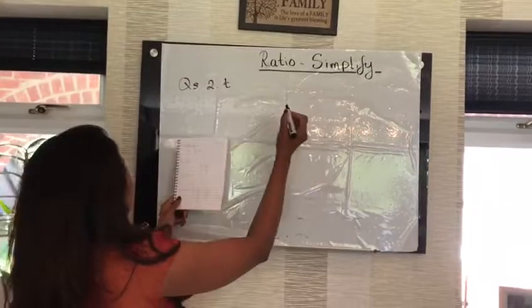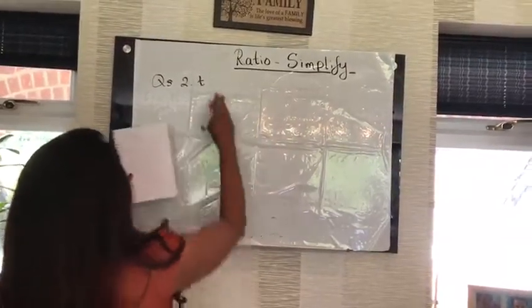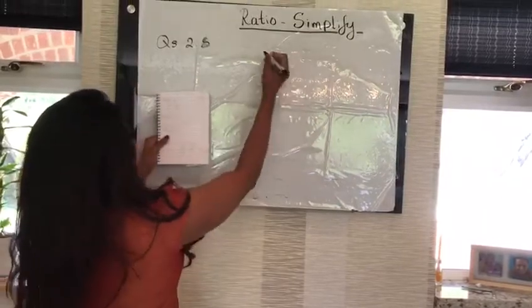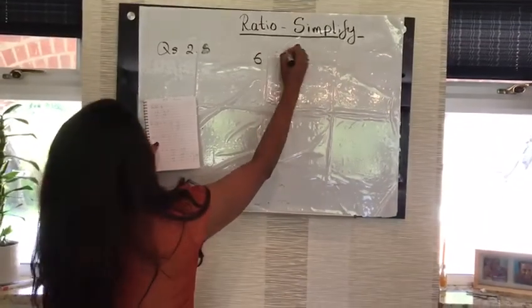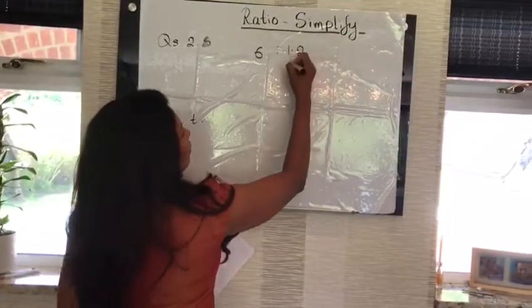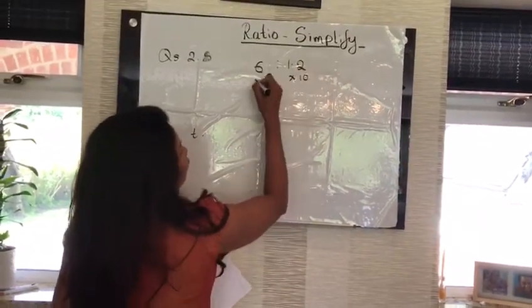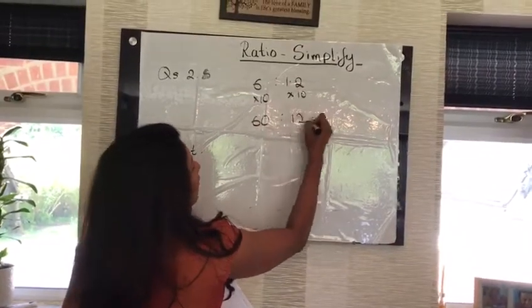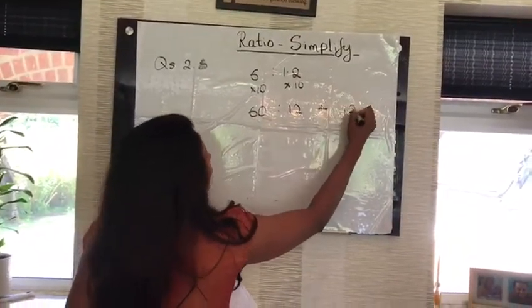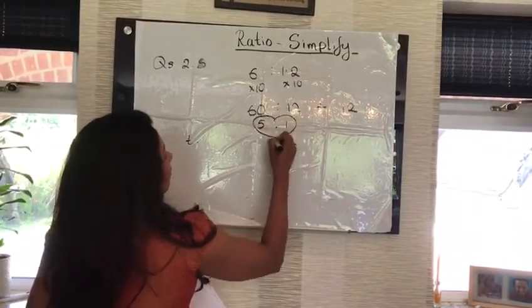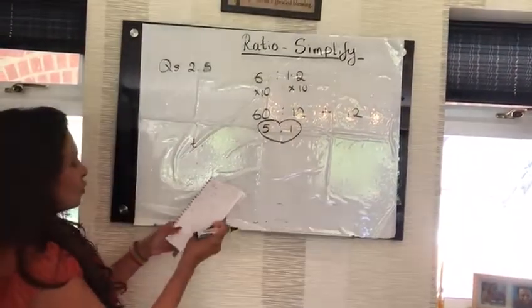Question 2T is 6 to 1.2. Now, I have a decimal on the right-hand side. So, times by 10 to get rid of that. Do the same on the left. This becomes 60 to 12. Divide both by 12. 12 times 5, 12 times 1 is the answer.